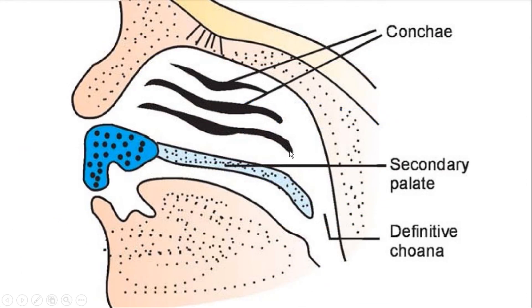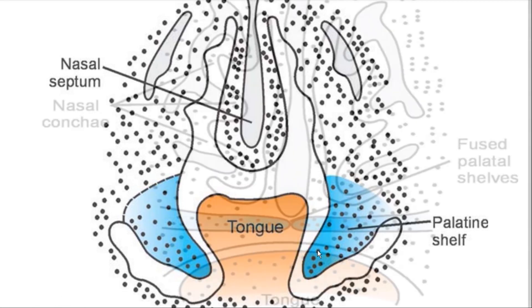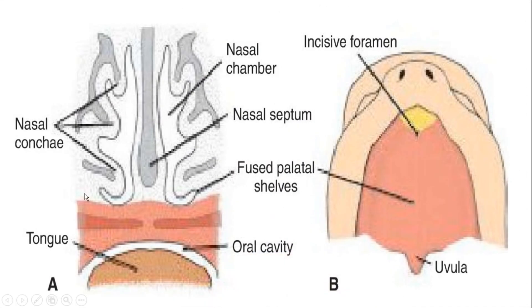The secondary palate is also formed at the same time from the palatine shelves, which are the medial extensions of the maxillary processes that grow downwards first and then rotate upwards into the horizontal position to form the secondary palate. The secondary palate then fuses with the primary palate anteriorly and superiorly with the bony nasal septum, both of which are formed from the intermaxillary region. The site of fusion of the primary and the secondary palate is the incisive foramen.